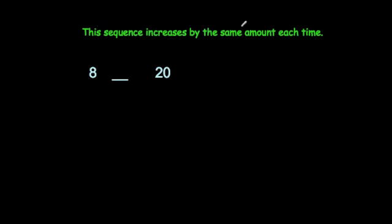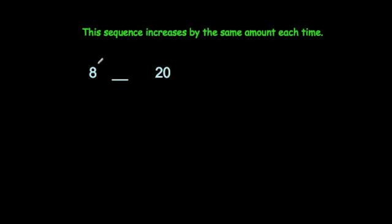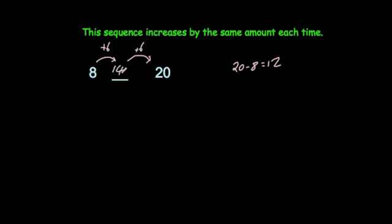This sequence increases by the same amount each time. To get from 8 to the missing number you add something, and to get from that number to 20 you add the same amount. Overall, 20 take away 8 is 12, so to get halfway you add 6 then add 6. Check: 8 plus 6 is 14, and 14 plus 6 is 20. So that's right.